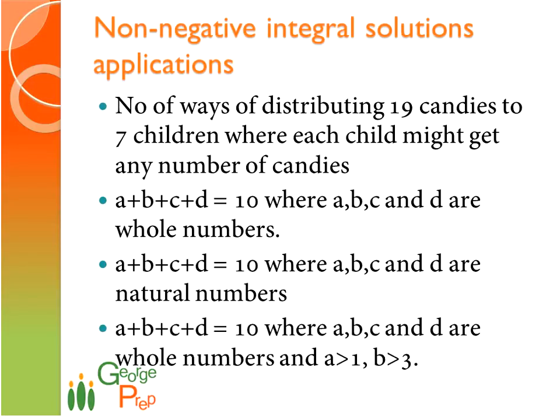Consider A plus B plus C plus D equals 10 where A, B, C, D are whole numbers and A is greater than 1 and B is greater than 3. The minimum value of A is 2 and minimum value of B is 4. So we modify it as A dash plus 2 plus B dash plus 4 plus C plus D, which gives A dash plus B dash plus C plus D plus 6 equals 10. That becomes A dash plus B dash plus C plus D equals 4. Now A dash, B dash, C, and D can take any values from 0, so you can apply the formula directly.